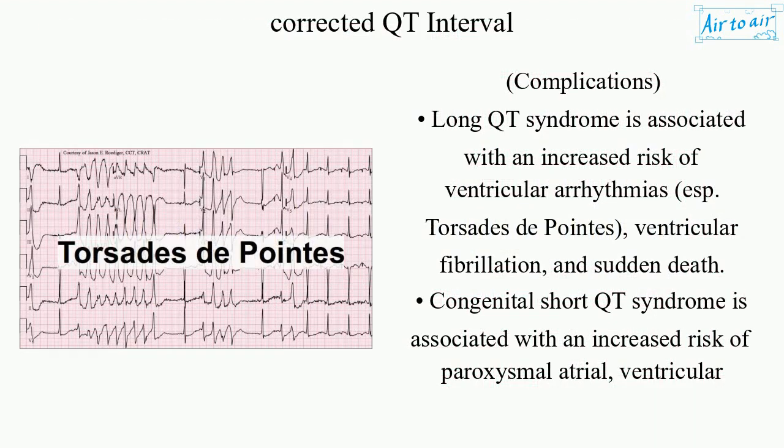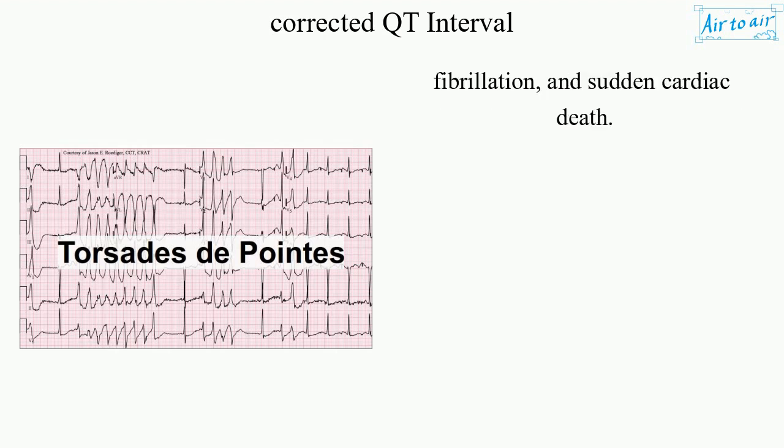Complications: Long QT syndrome is associated with an increased risk of ventricular arrhythmias, especially torsades de pointes, ventricular fibrillation, and sudden death. Congenital short QT syndrome is associated with an increased risk of paroxysmal atrial fibrillation, ventricular fibrillation, and sudden cardiac death.